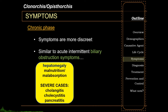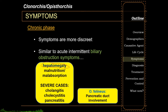Please take note that hepatomegaly is usually seen during the chronic phase of Clonorchis and Opisthorchis infections, rather than during the acute phase. As a side note, Opisthorchis felineus is more primarily involved in the pancreatic duct and the associated symptoms there.